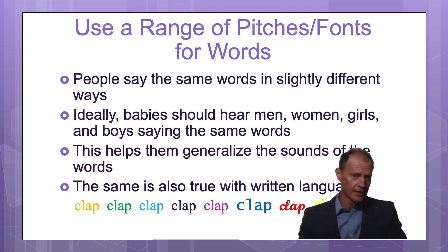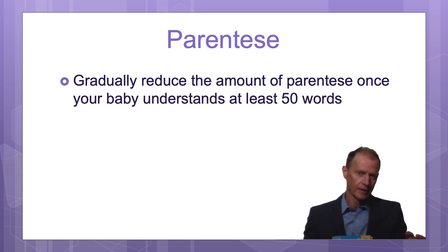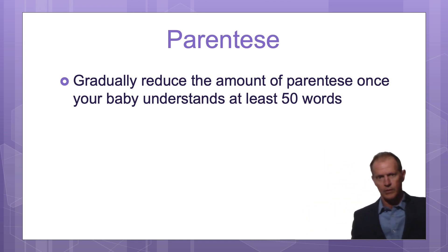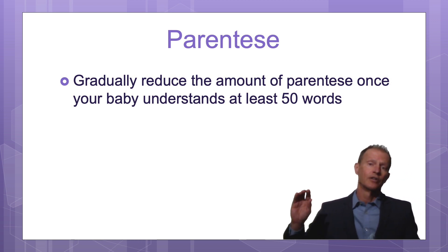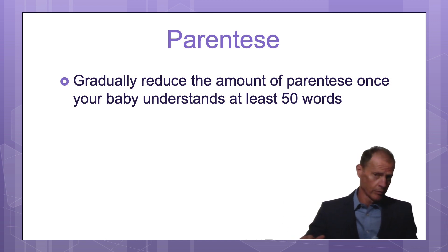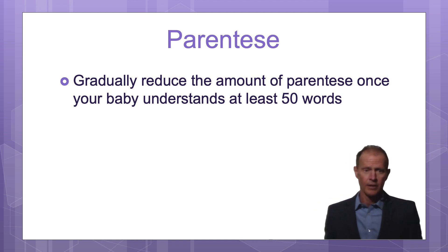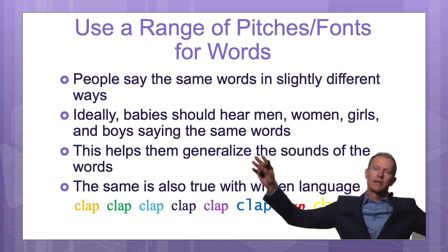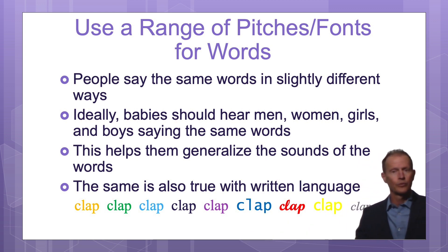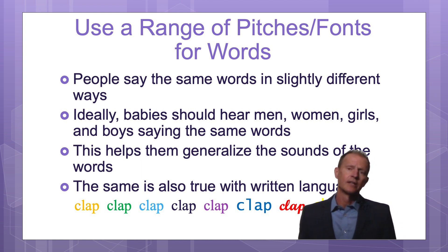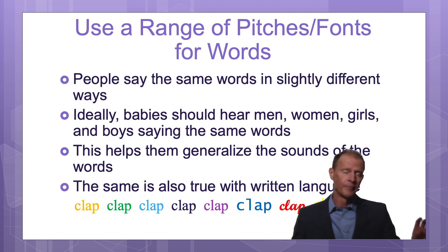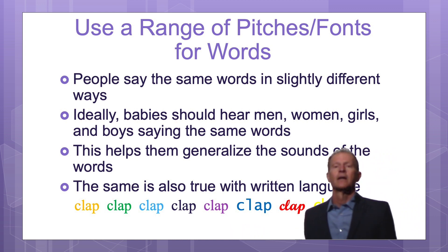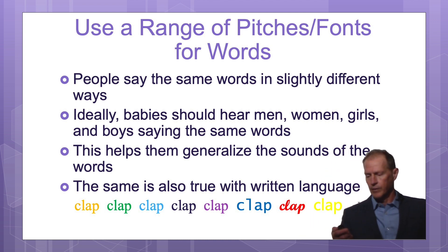I want parents to talk in parentese at least until the baby understands around 50 words, and then gradually reduce it and use more of a normal adult way of speaking, but still in a happy voice. Don't only speak in a super happy voice, because if the baby hears a monotone voice, the baby won't recognize the word according to research. Ideally, babies would get to hear men, women, boys, and girls, since we all speak with slightly different pitches, and people from different regions also speak differently. The child will understand words more easily if they hear a wide range of speakers.